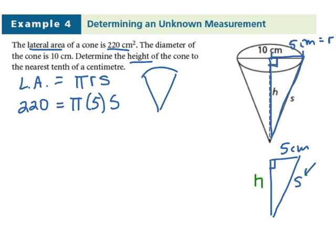So let's say we found the slanted height right here, then we could use Pythagoras to find the height. Our plan is to find the slanted height using the lateral area equation, and then use Pythagoras to find the height. This is a two-step process.